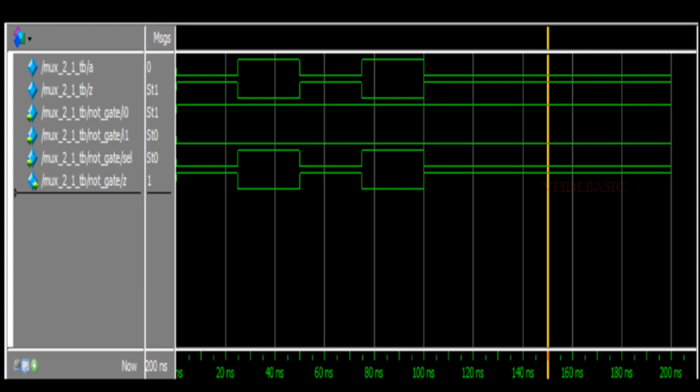Now I am going to explain the simulation waveform. If you see here, whatever value is present in a has been inverted in z. That is called the NOT gate. Wherever a equals 0, z is 1. Wherever a equals 1, z is 0.